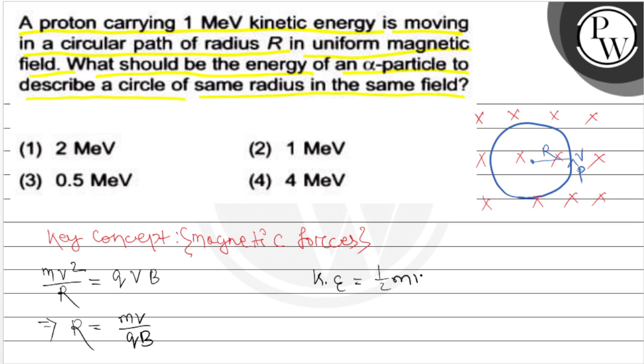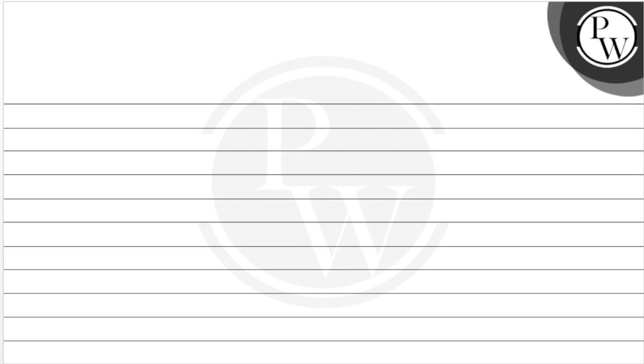Kinetic energy of a particle is half mv² and v is equal to √(2k/m). This is the velocity. But here the question asks what should be the energy of an alpha particle to describe a circle of same radius. That means radius of alpha and radius of proton are equal, but mass of the alpha particle is 4 times mass of the proton, similarly charge of alpha particle is 2 times charge of proton.